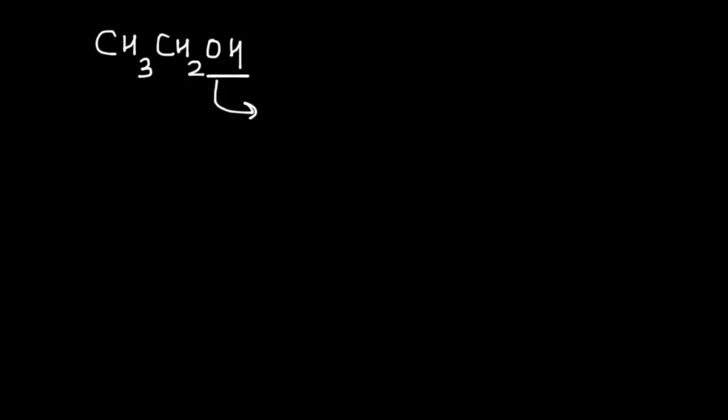Functional isomers have different functional groups. So the trick is to change the connections to change the functional group. What I am going to do is keep the molecular formula same but we are going to reorder the arrangement of atoms.